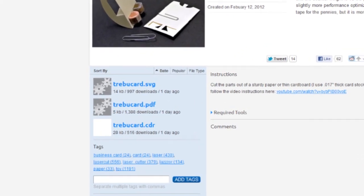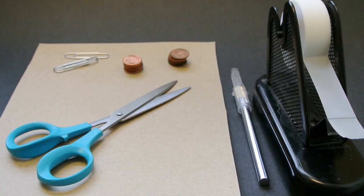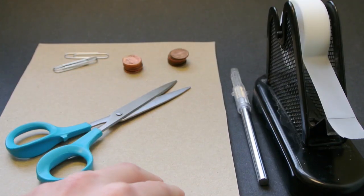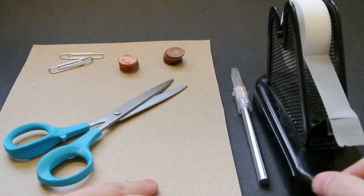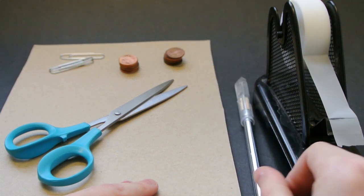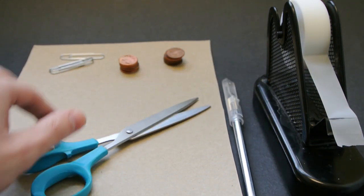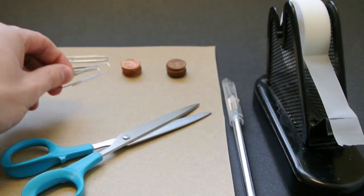There's a variety of formats available, just download whichever works best for you. You'll also need materials including thick paper or cardboard, tape, a hobby knife or other sharp blade, scissors, 16 pennies, and jumbo paperclips.